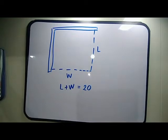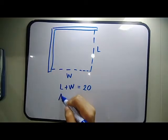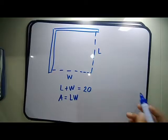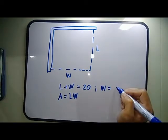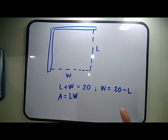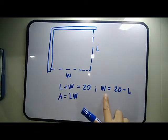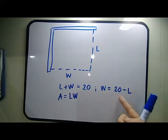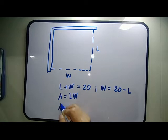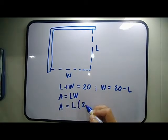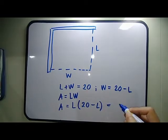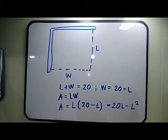What is the maximum rectangular area? The area equals length times width. We can say that width equals 20 minus L. So we are maximizing the area and will express it in terms of one variable. Substituting, area equals length times (20 minus L), giving us area equals 20L minus L squared. We have now reduced it to a two-variable equation with one variable on the left side and one variable on the right side.